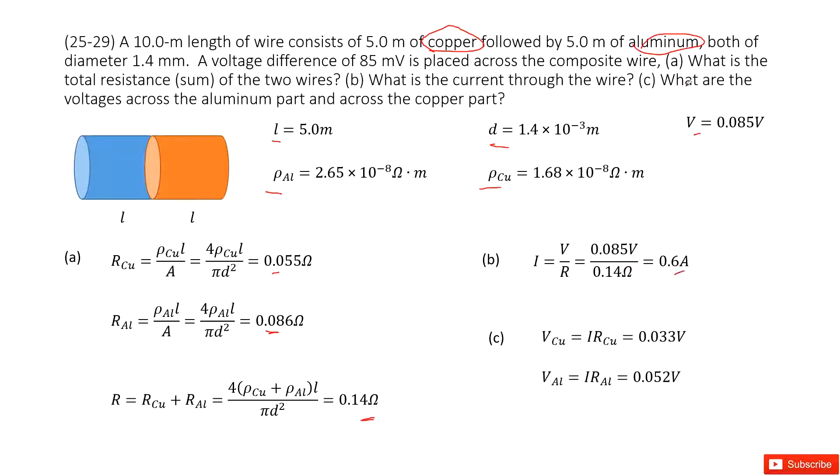The voltage for the aluminum part and across the copper part. So easy. As we can see, this copper part and aluminum part are connected in series connection. The current equals, agree? The current equals. So that makes the voltage for copper equal current times resistance for copper. Input the given quantity, get the answer there. The voltage for aluminum equals the current times resistance for aluminum. Input these two quantities, get the answer there.